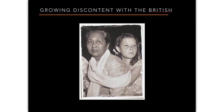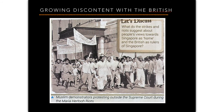A photograph shows Che Aminah and Maria, illustrating how close their bond was and how difficult it was for Che Aminah to give Maria up to her natural parents. Another image shows people protesting outside the Supreme Court against the court's decision to give custody of Maria to her Dutch parents rather than to Che Aminah.